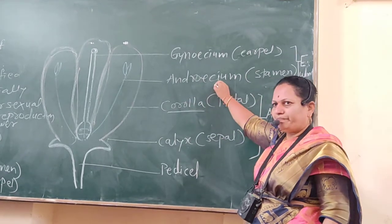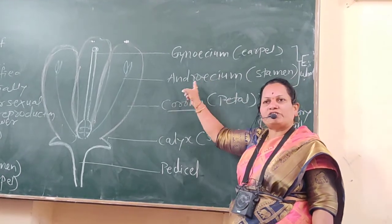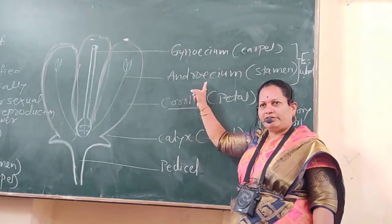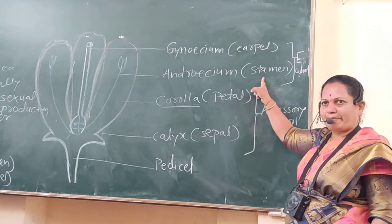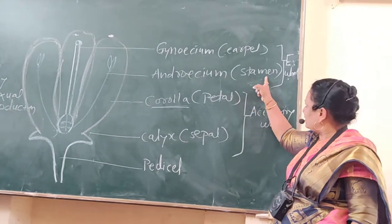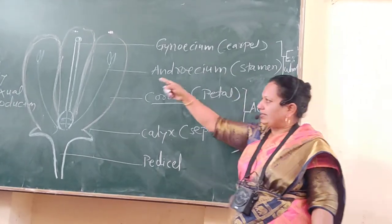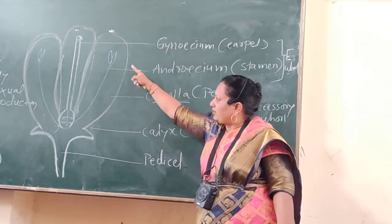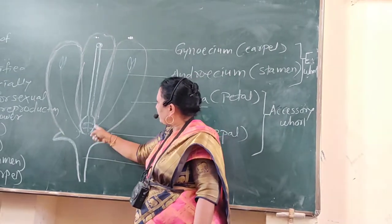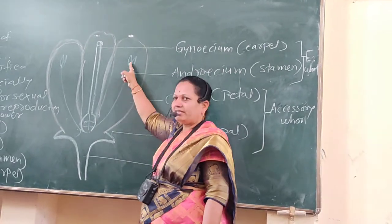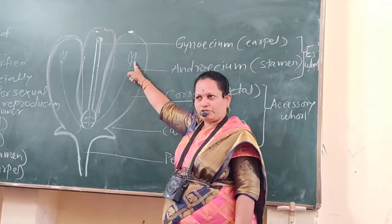The next whorl of the flower is called the androecium. It is a main reproductive structure. The individual part of androecium is called a stamen. A single stamen consists of an anther and a filament. In the anther, pollen grains are produced.